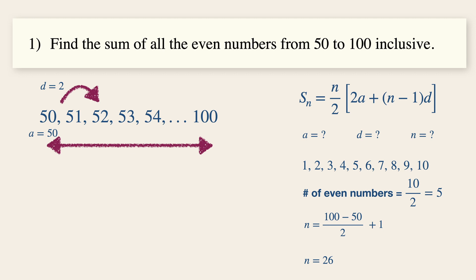With these values of a, d, and n, simply plug them into the sum of the first n terms. So we could write s 26 of the even terms is equal to 26 over 2 multiplied by 2 times 50 plus n minus 1, which is 26 minus 1 times 2. And this will be equal to 26 multiplied by 50 plus 25, which gives us a value of 1950.